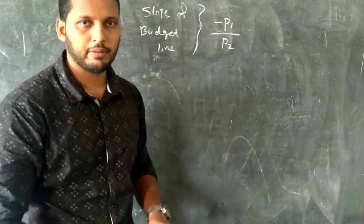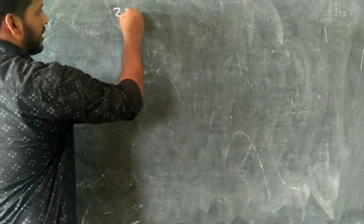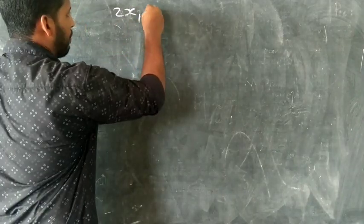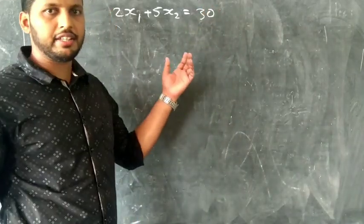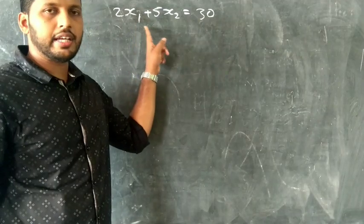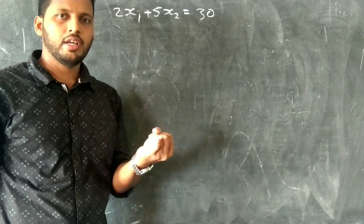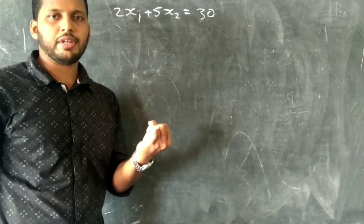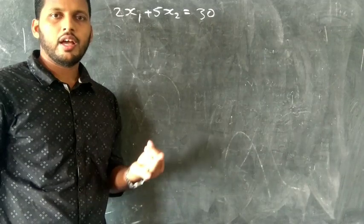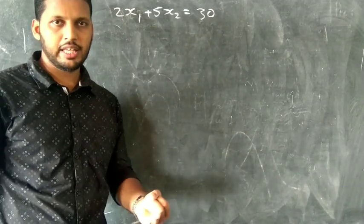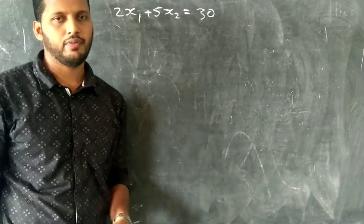Now we have to discuss the next question. Suppose if the budget equation is 2x1 plus 5x2 is equal to 30. This is the budget line equation. First, calculate the horizontal intercept and vertical intercept. Second, calculate the slope of the budget line.